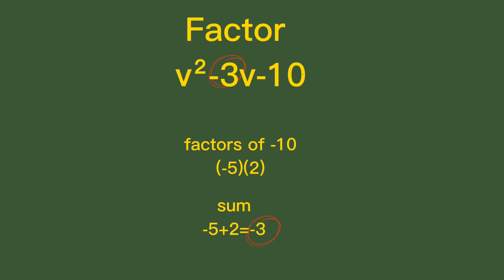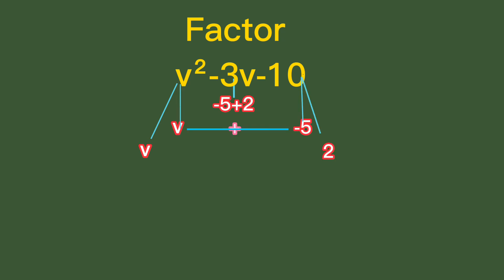Look at this illustration. This time, our factors of this trinomial are (v minus 5) times (v plus 2). You can check our answers by applying the FOIL method in multiplying the two factors.